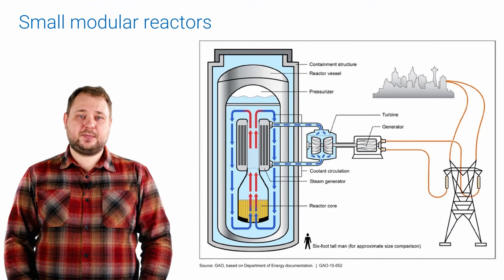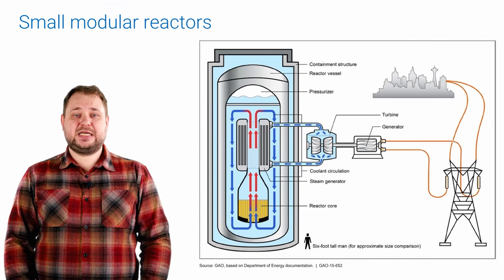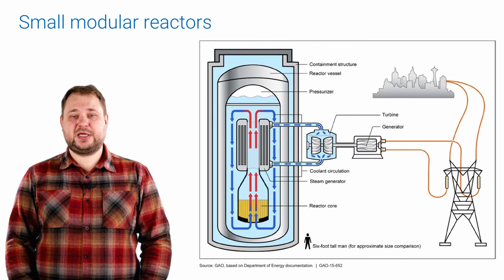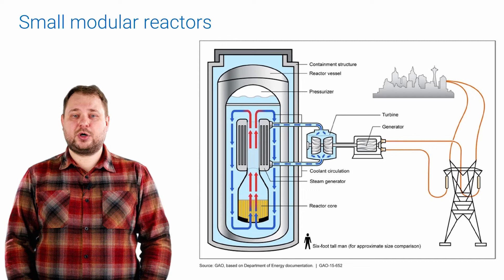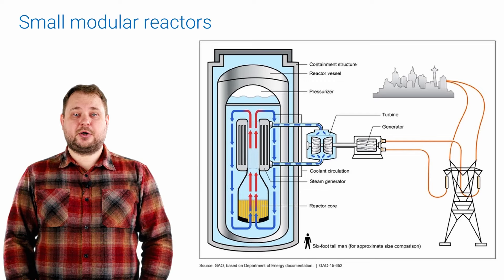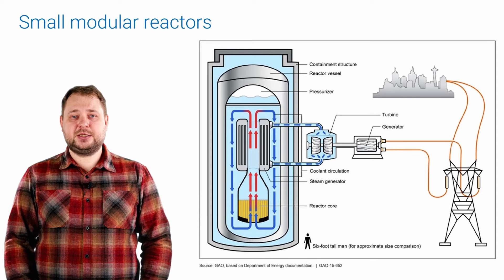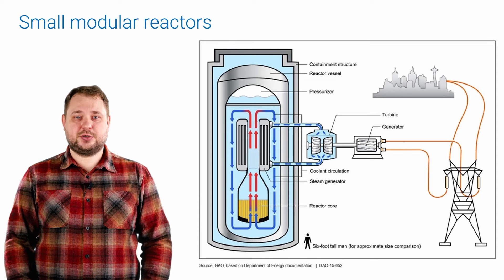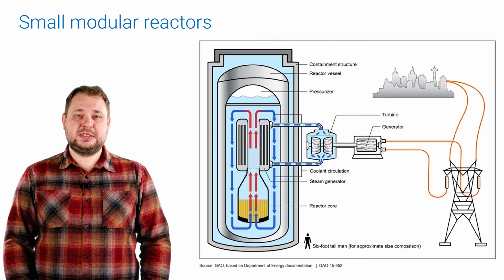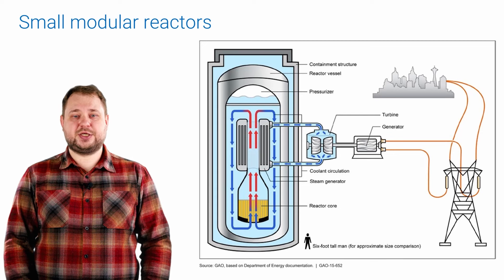The small modular reactor is a light water pressurized water reactor. Essentially, an improved version of the reactors in service today except that they are more compact and can be mass produced like cars. Their goal is to reduce the cost of nuclear energy by introducing plant production technologies. Essentially, the idea is to create small standardized reactors of less than 300 megawatts each.